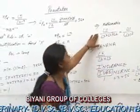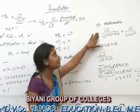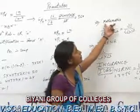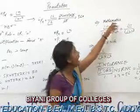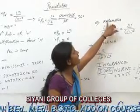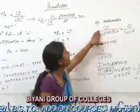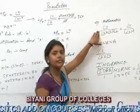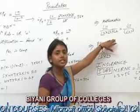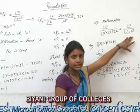The word is MATHEMATICS. The question is: in how many ways can the word MATHEMATICS be arranged? The total number of alphabets is 11, and M is repeated 2 times, A is repeated 2 times, and T is also repeated 2 times. So the value is equal to factorial 11 upon (factorial 2 into factorial 2 into factorial 2), which equals factorial 11 upon factorial 2 to the power 3.